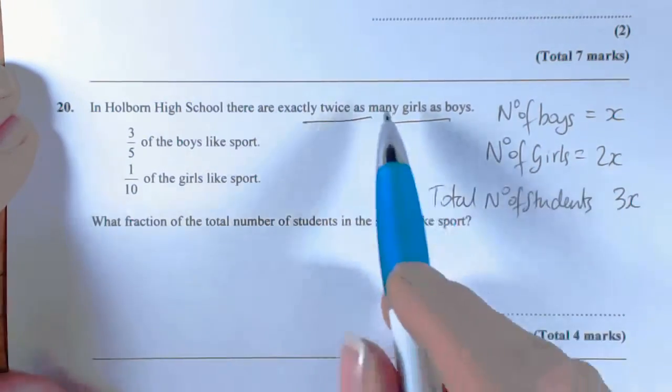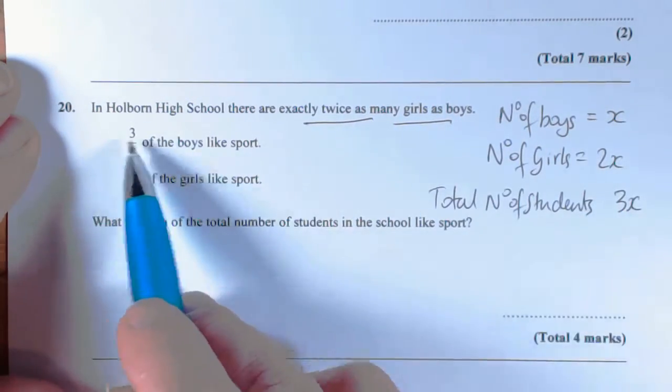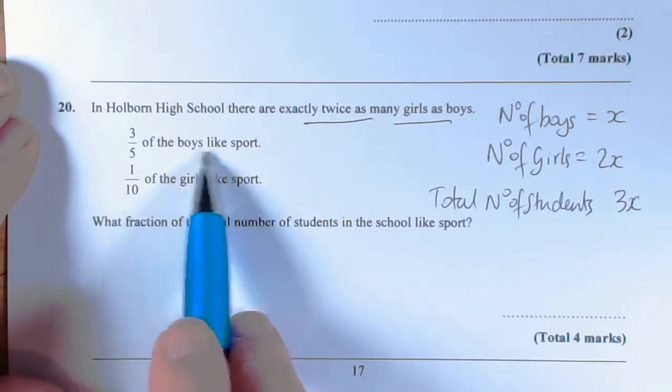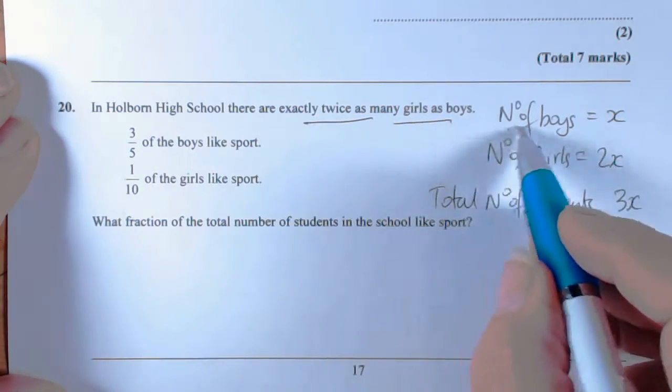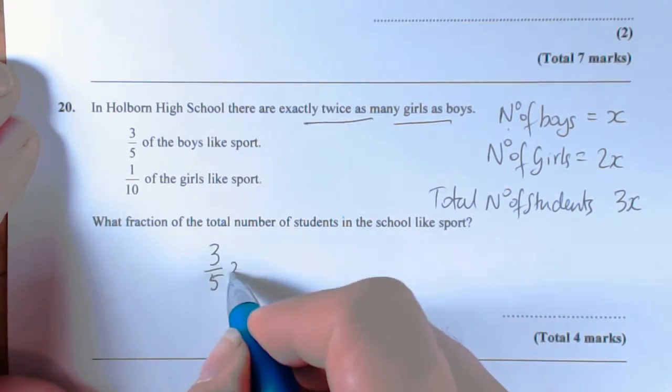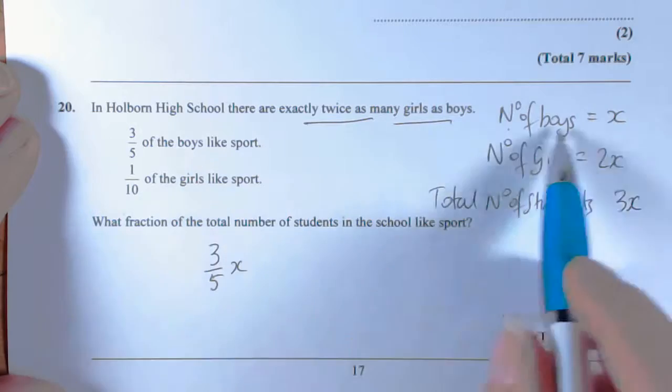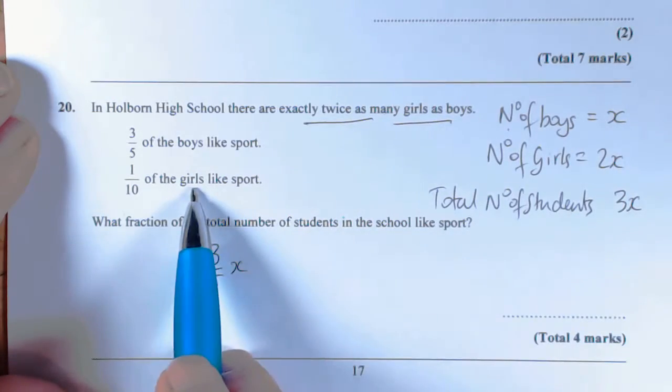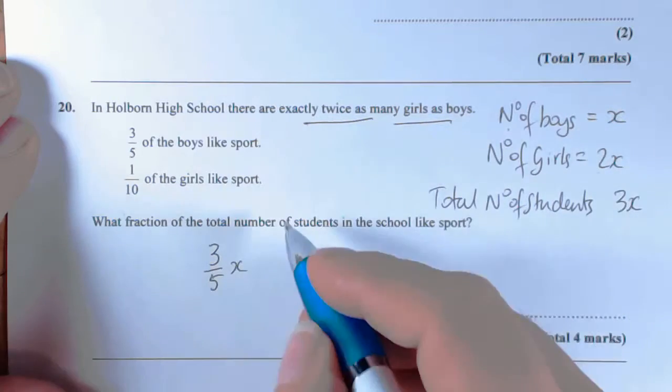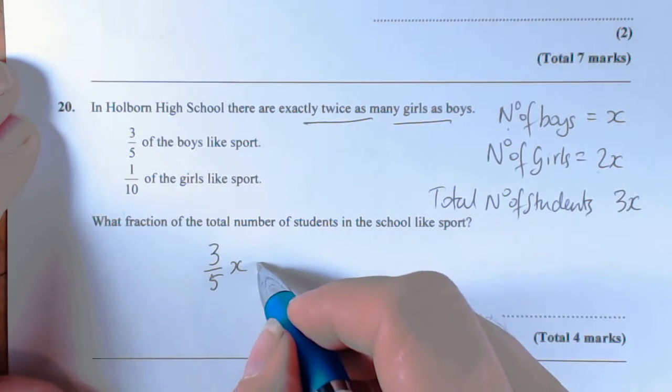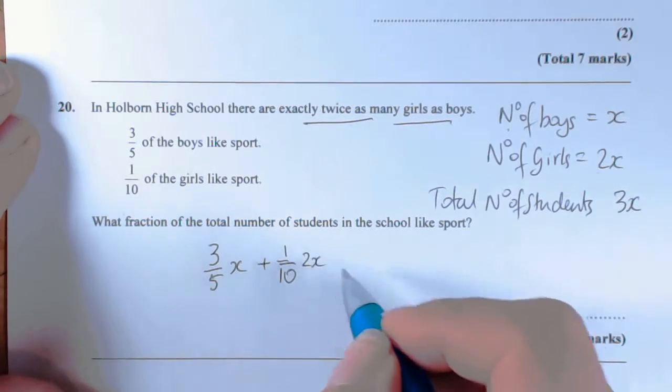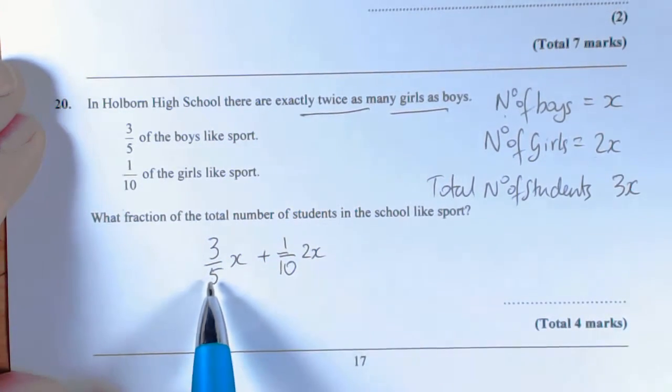So therefore we can go through now looking at how we can deal with that. Three-fifths of all the boys like sport, so basically we said that the number of boys was X, so we're saying 3/5 of X like sport. One-tenth of the girls also like sports, and the number of girls was 2X, so we're going to do plus 1/10 of 2X.